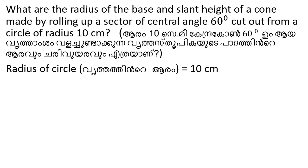The radius of the circle becomes the slant height of the cone. If we roll up a sector, the slant height equals 10 cm. So the slant height is 10 cm.